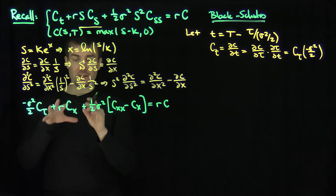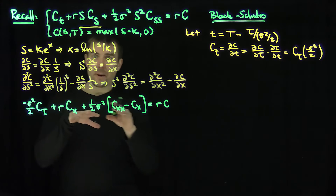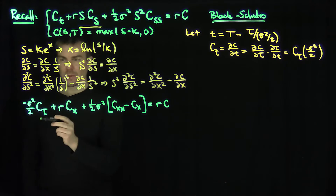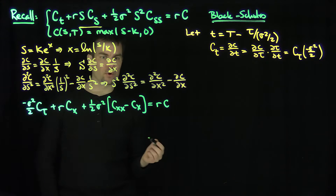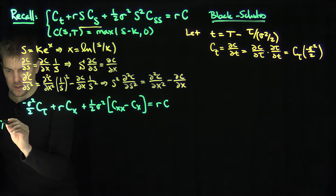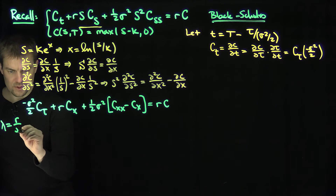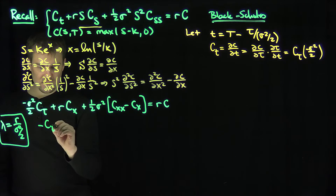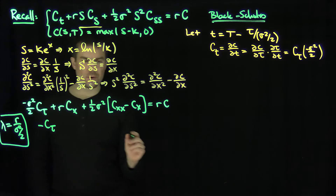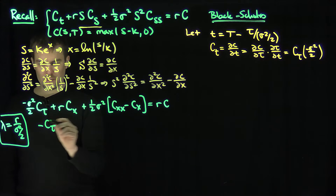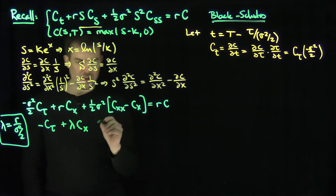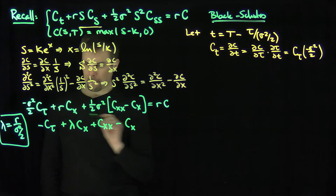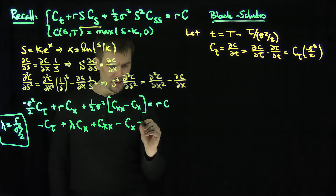Now with respect to the x variable, there's no more independent variable x multiplying c, c_x, or c_tau. I'm going to divide the entire equation by sigma squared over 2 and define a new parameter lambda equal to r over (sigma squared over 2). Then the equation becomes: negative c_tau plus lambda·c_x plus c_xx minus c_x equals lambda·c.